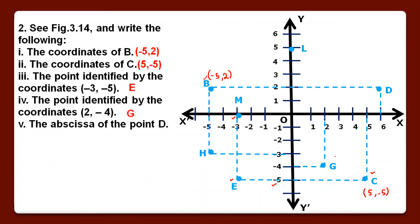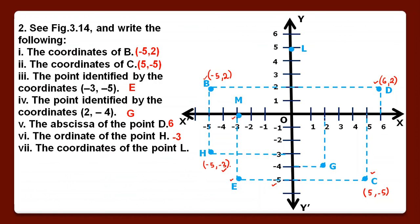Fifth is the abscissa of point D. Here we have point D. X-coordinate is minus 5 and y is minus 3, so x-coordinate kya hoga: minus 3, in this way.